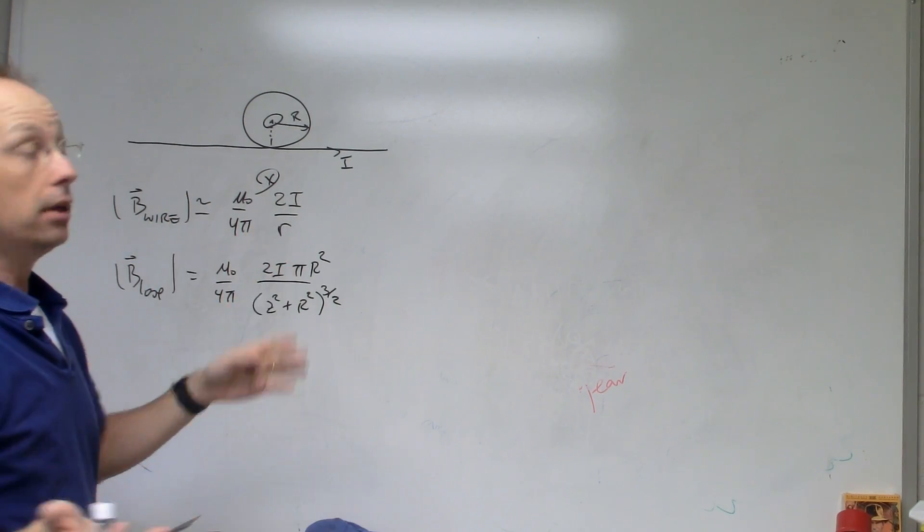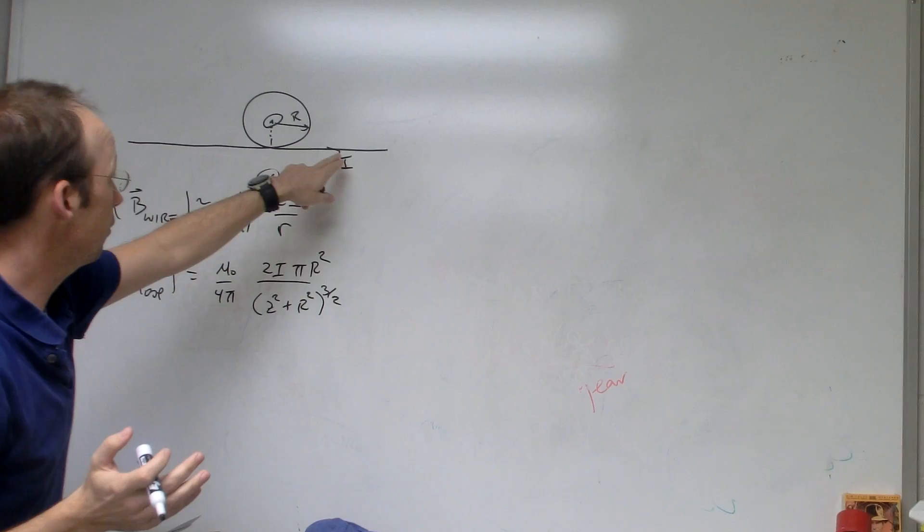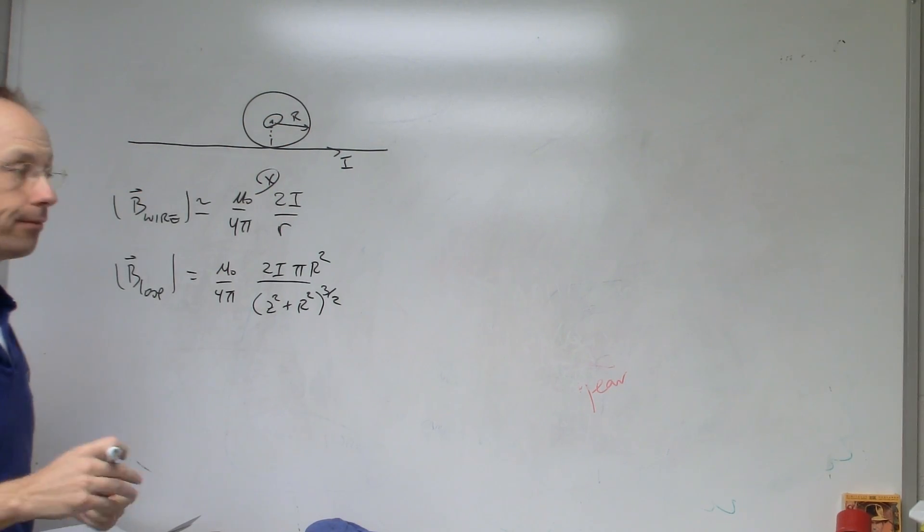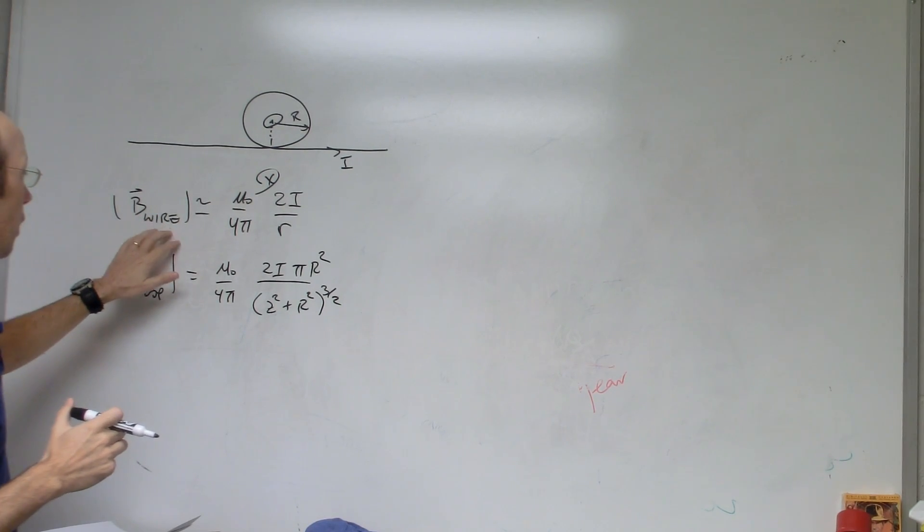So I got the direction, and if I find the magnitude of this magnetic field and the loop magnetic field, I can just add them together. And that's what we're going to do. So it's not a terribly difficult problem.